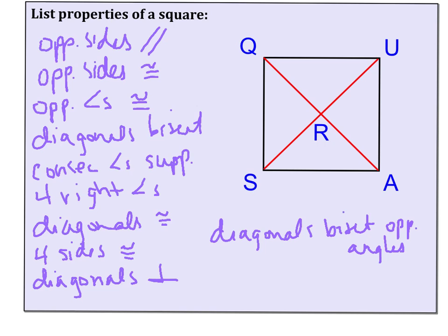So all of the properties of a parallelogram, a rectangle, and a rhombus would be the properties of a square.